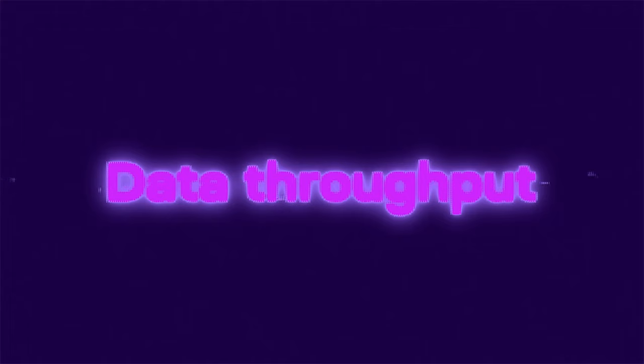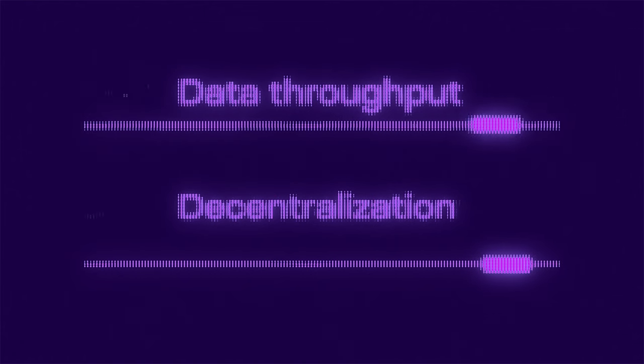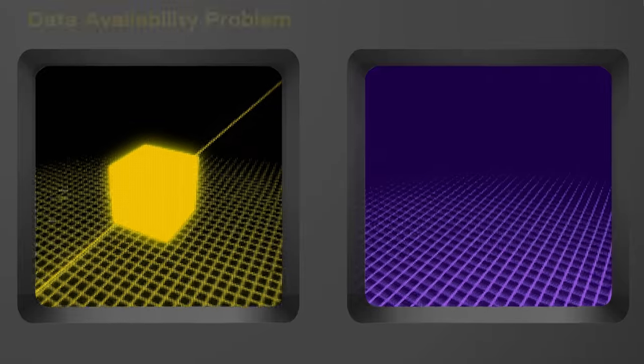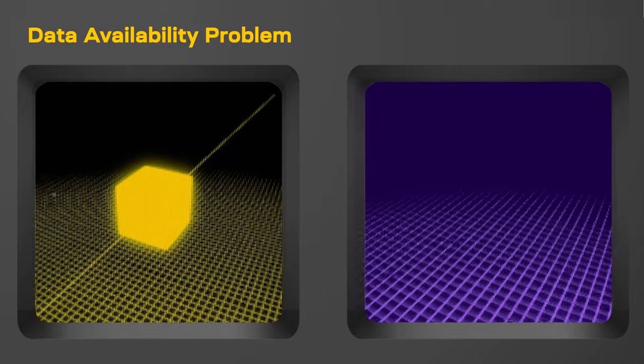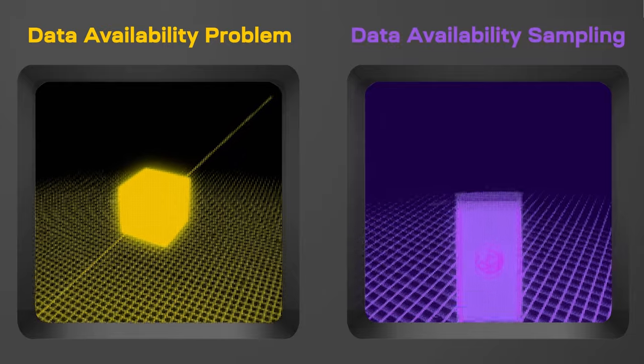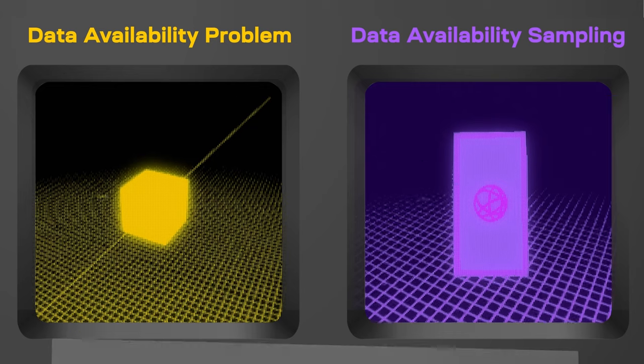The purpose of blockchains isn't data throughput, but the ability to participate and verify yourself. Scaling them requires designing under the constraint of increasing data throughput while keeping verification low. In simple terms, creating large blocks that hold lots of transactions while making sure that all data is there in the first place — this describes the data availability problem and makes it easy for anyone to check for themselves. This is what Celestia does, and with these design constraints came the idea of data availability sampling.